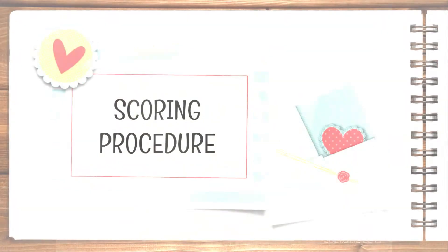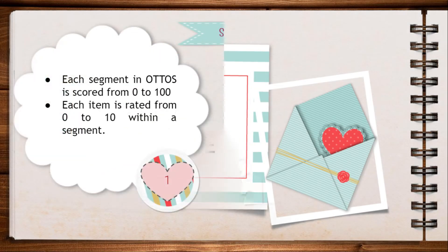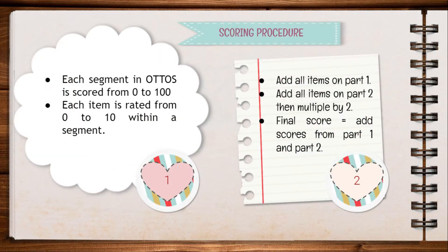Next is the scoring procedure of OTOS. Each part in OTOS is scored from 0 to 100, as all 15 items in this scale are rated from 0 to 10, where 0 indicates dysfunctional or maximal dysfunction, while 10 indicates functional or no evidence of dysfunction.